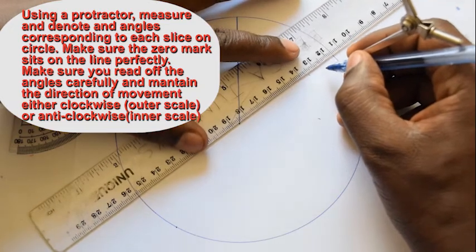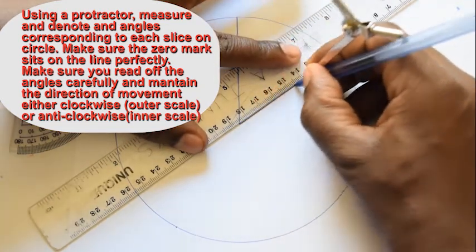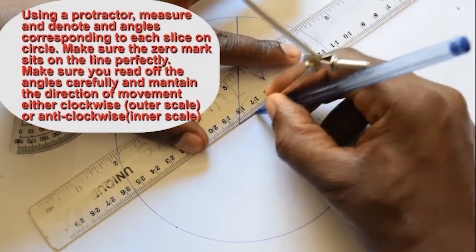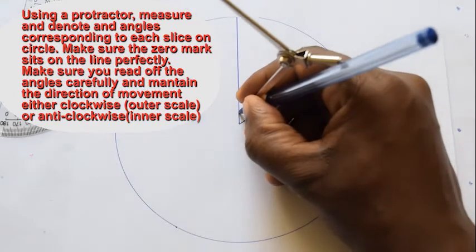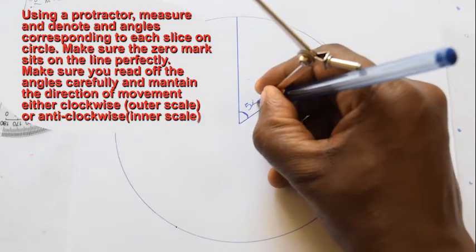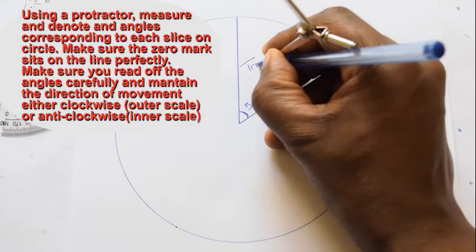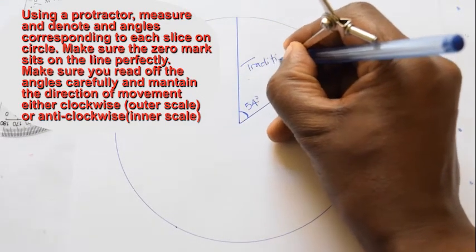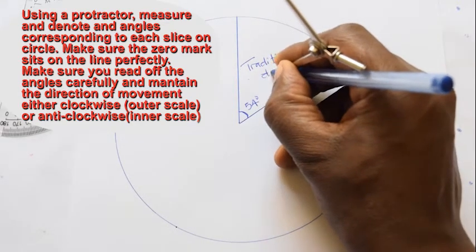Maintain the direction of movement, either clockwise or anticlockwise. If you are measuring in the clockwise direction, use the outer scale; if anticlockwise, use the inner scale.